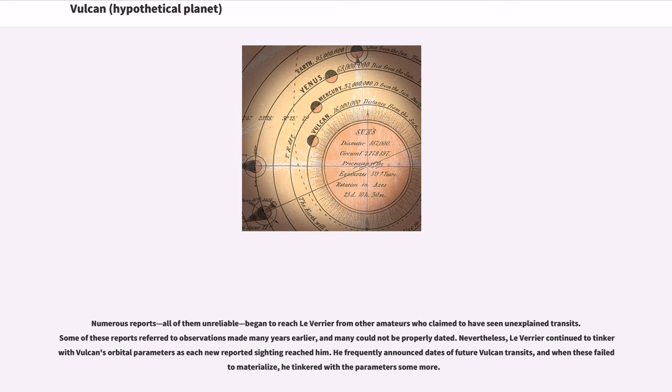Numerous reports, all of them unreliable, began to reach Le Verrier from other amateurs who claimed to have seen unexplained transits. Some of these reports referred to observations made many years earlier, and many could not be properly dated. Nevertheless, Le Verrier continued to tinker with Vulcan's orbital parameters as each new reported sighting reached him.